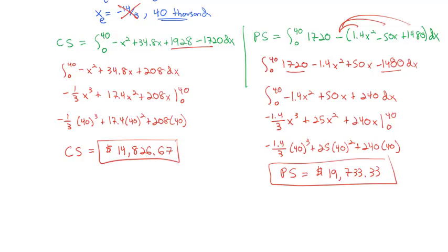So when 40,000 items are produced and sold at the equilibrium price of $1720, the consumer is saving $14,826, and the producer is making an additional $19,733. This is the best case scenario for both groups — everyone saves or makes money, and everyone is happy with that equilibrium price and production level. Now it's your turn to find equilibrium prices, equilibrium demand, and consumer and producer surplus. Practice several of these, come to class with questions, and we'll discuss them more.